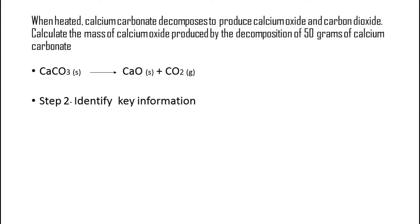Our next step is to identify the key information. The question says calcium carbonate decomposes to produce calcium oxide and carbon dioxide, and we are asked to calculate the mass of calcium oxide produced by the decomposition of 50 grams of calcium carbonate. This means we are only really concerned with calcium carbonate and calcium oxide. Carbon dioxide was only important in ensuring we had a balanced equation.